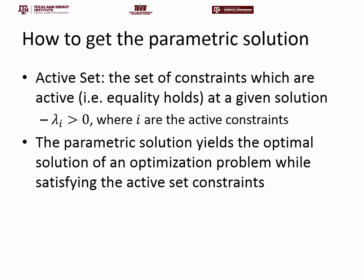The parametric solution yields the optimal solution of an optimization problem while satisfying the active set constraints. Graphically: if there were no constraints, for a convex problem we could just set the derivative to zero and find the optimum. But with constraints, a solution optimal over some parameters doesn't have to be valid everywhere — it might violate constraints. Any parametric solution is always valid for a certain active set, and those constraints in fact bound your critical region — determining where the parametric solution is both optimal and feasible.